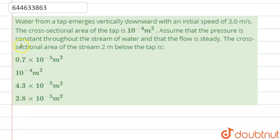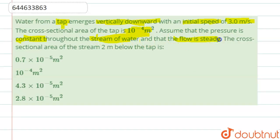Hello students, now we are going to see this question. The question says that water from a tap emerges vertically downwards with an initial speed of 3 meters per second. The cross-sectional area of the tap is 10 to the power minus 4 meter square. Assume that the pressure is constant throughout the stream of water and the flow is steady. The cross-sectional area of the stream 2 meters below the tap is what we need to find.